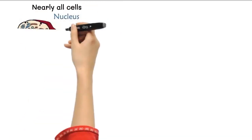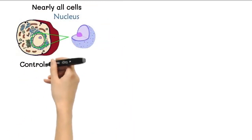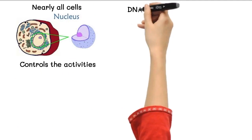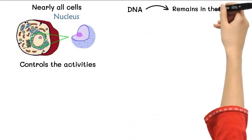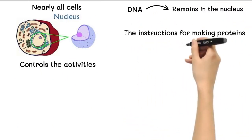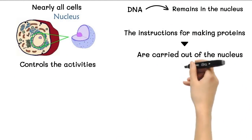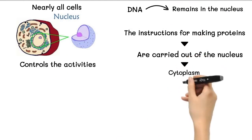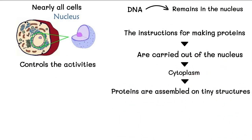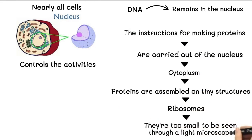Nearly all cells have a nucleus. The nucleus controls the activities of the cell. The DNA remains in the nucleus, but the instructions for making proteins are carried out of the nucleus to the cytoplasm, where the proteins are assembled on tiny structures called ribosomes. A cell contains thousands of ribosomes, but they are too small to be seen through a light microscope.